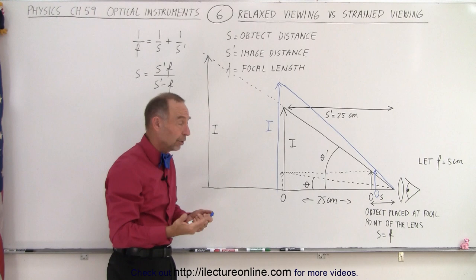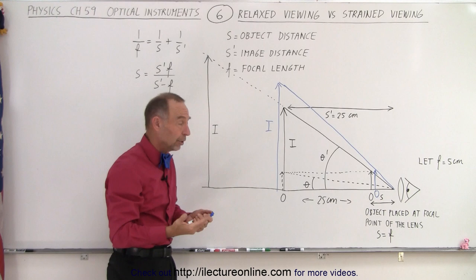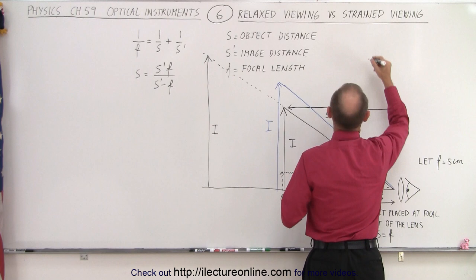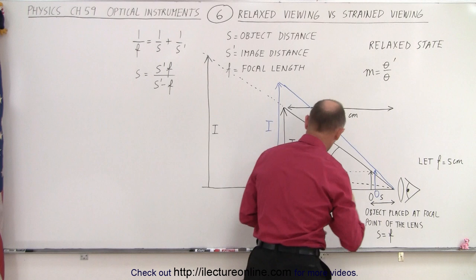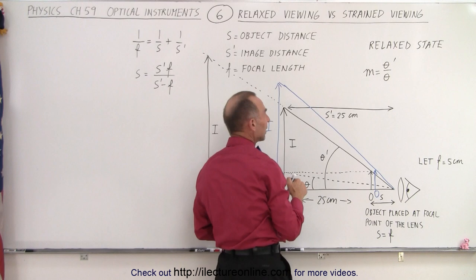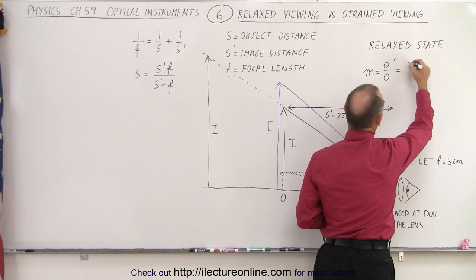And so the magnification is the way we saw it before. The magnification in that relaxed state. So in the relaxed state, we saw that the magnification was equal to the ratio of the new angle subtended by the image divided by the angle subtended by the object placed at the same distance. And we saw that this was going to be equal to, in the previous video,